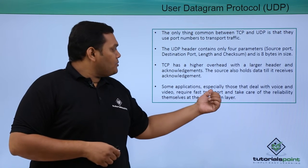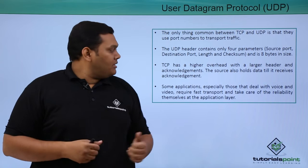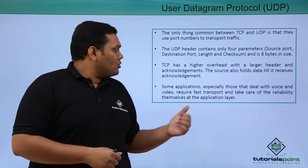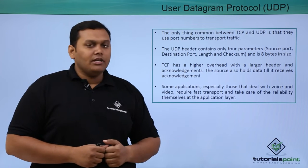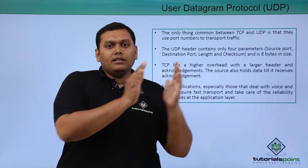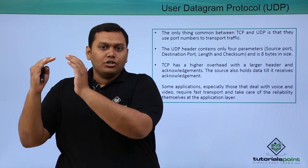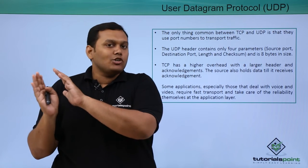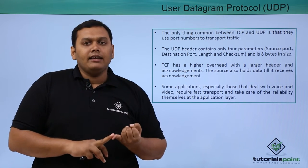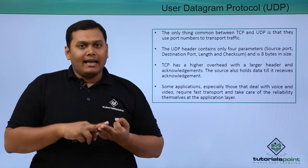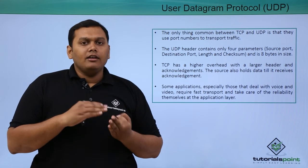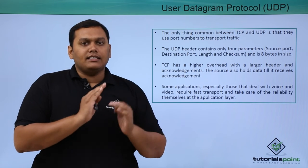Some applications, especially those that deal with voice and video, require a faster transfer rate, so they take care of reliability themselves at the application layer. UDP is much less reliable than TCP as it does not perform reliable data delivery, flow control, or error handling, which is why TCP is used more in the transport layer for those complex functions.